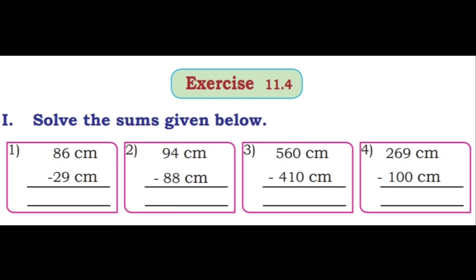Exercise 11.4, solve all the sums below. Q1: 86 cm minus 29 cm. 6 minus 9, need to borrow: 16 minus 9 is 7, then 7 minus 2 is 5. Answer: 57 centimeter. Q2: 94 cm minus 88 cm. Borrow: 14 minus 8 is 6, 8 minus 8 is 0. Answer: 6 centimeter. Q3: 560 cm minus 410 cm. 0 minus 0 is 0, 6 minus 1 is 5, 5 minus 4 is 1. Answer: 150 centimeter. Q4: 269 cm minus 100 cm. 9 minus 0 is 9, 6 minus 0 is 6, 2 minus 1 is 1. Answer: 169 centimeter.